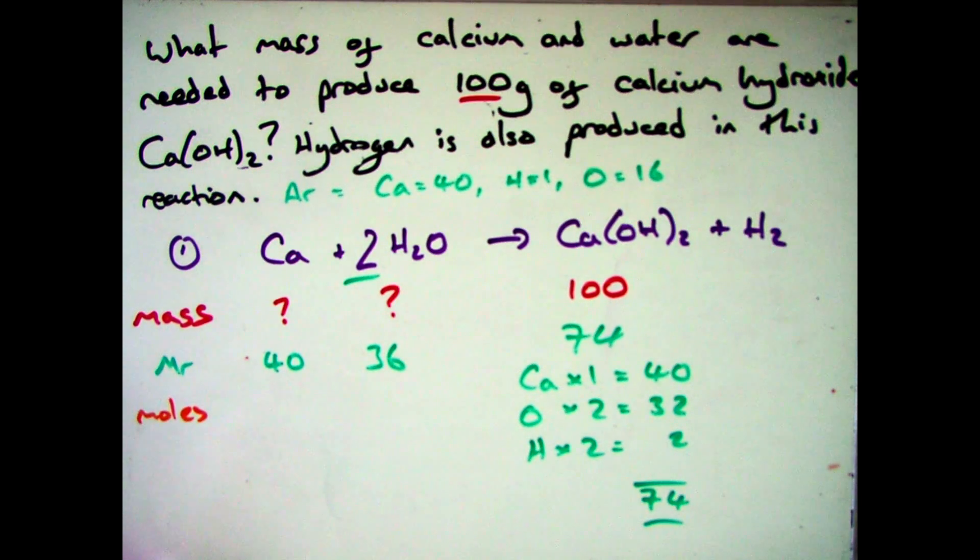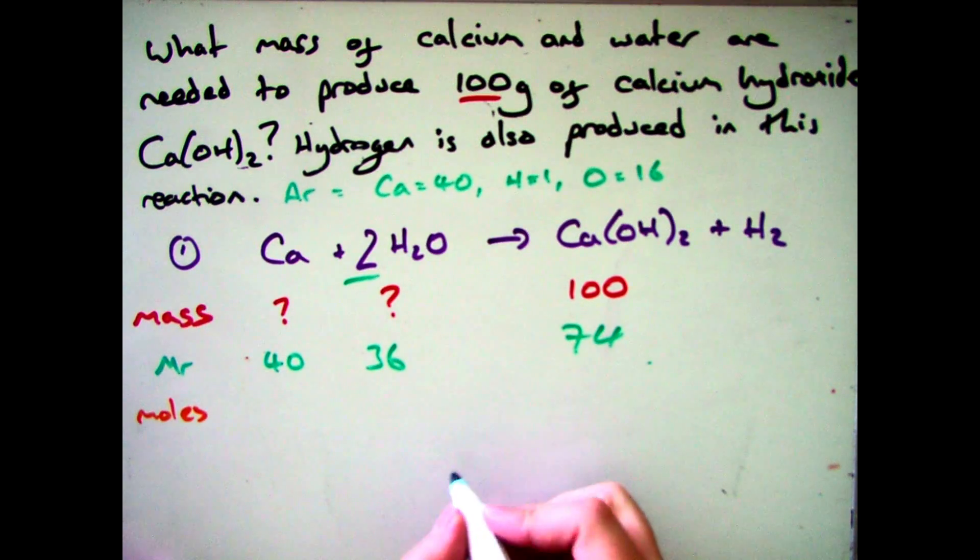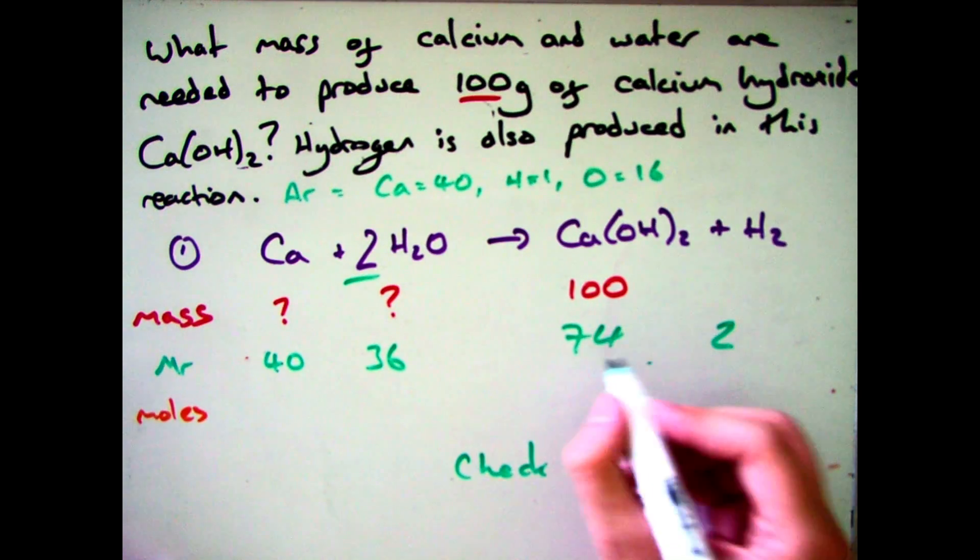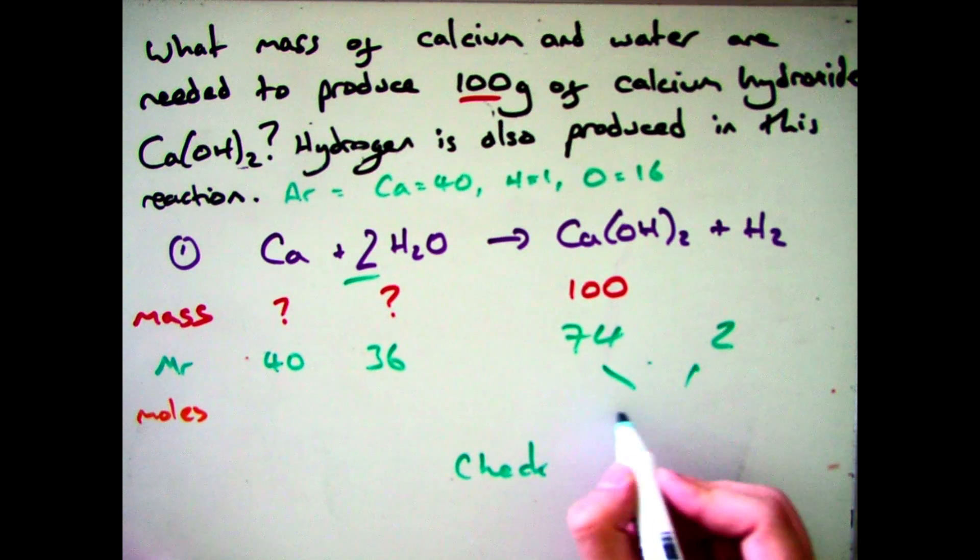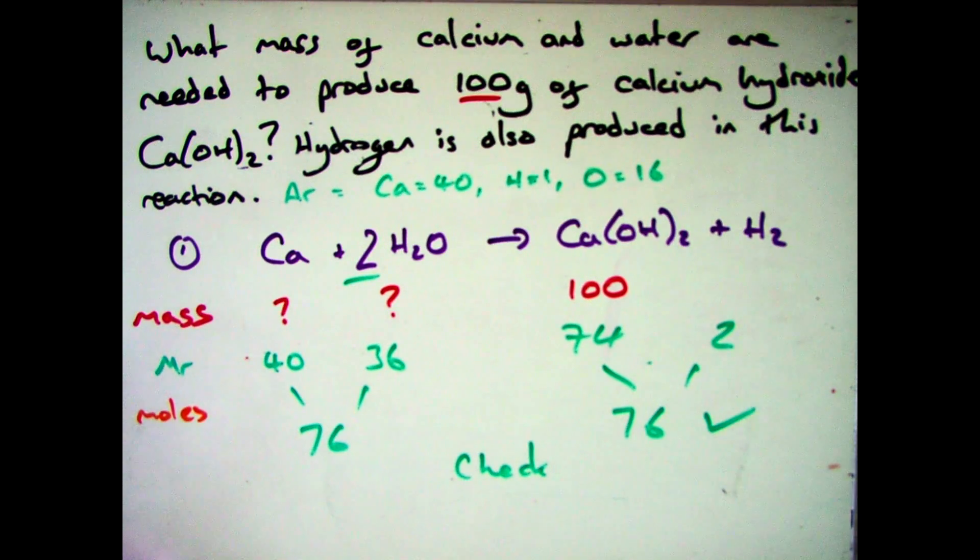Now at this stage, if you want to make sure that everything's correct, your best bet is to add up the atomic masses on both sides. So our molecular mass for calcium and water are 76. And if you do it for calcium hydroxide and hydrogen, that also gives you 76.